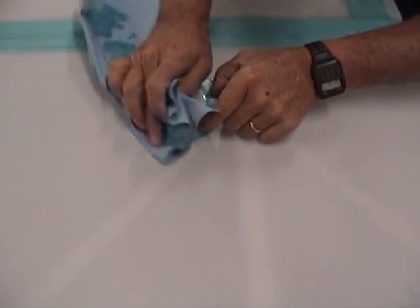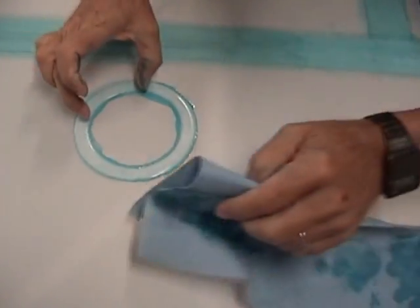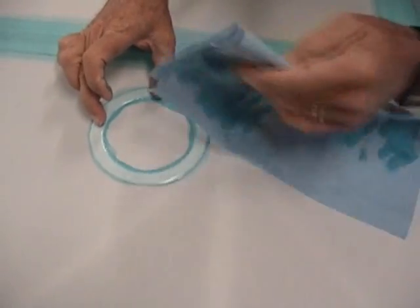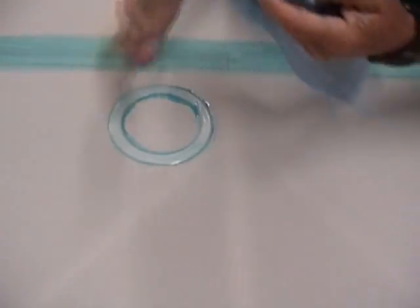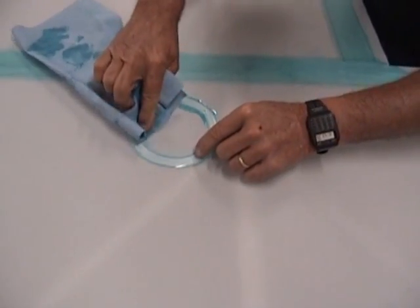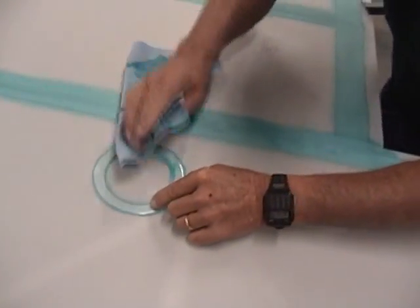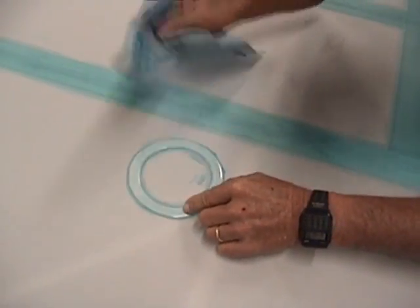We'll just take our towel and wipe the surplus. You don't need to get every bit of that off, because we're going to be ironing a doily over this a little later. We'll be gluing one on it, and that'll really finish this ring off.